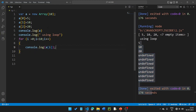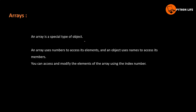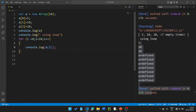An array is a special type of object — same as an object but a little bit different. In a regular object you use named properties with a colon format, but in an array the index format is used and arrays use numbers to access their elements. You can access and modify array elements using the index number.